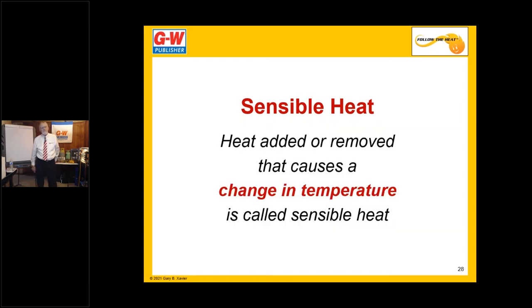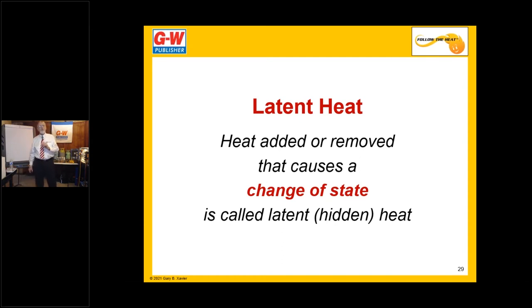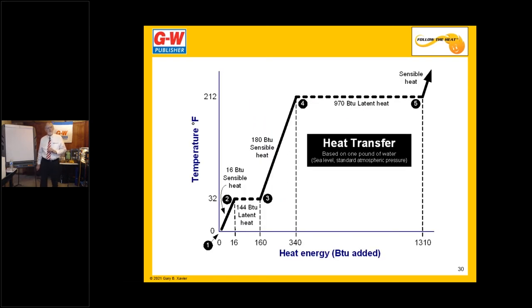There are two kinds of heat that we always talk about in our trade: sensible heat and latent heat. Sensible heat causes a change in temperature, where latent heat causes a change of state. If you look up the word latent in the dictionary, it's defined as hidden from plain sight. We call the change-of-state heat latent because it's hidden from our thermometer — during a change of state, there's no change in temperature. It's one or the other. Mother Nature won't let us do both at the same time. The change-of-state heat — the latent heat — does more work for us than the sensible heat.